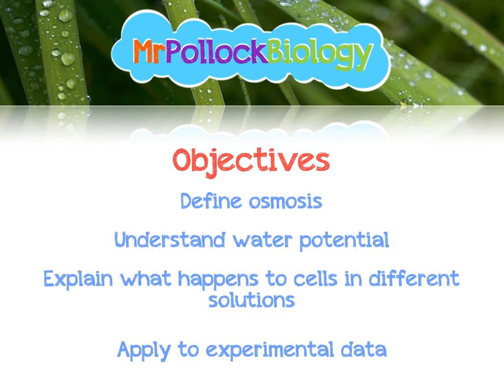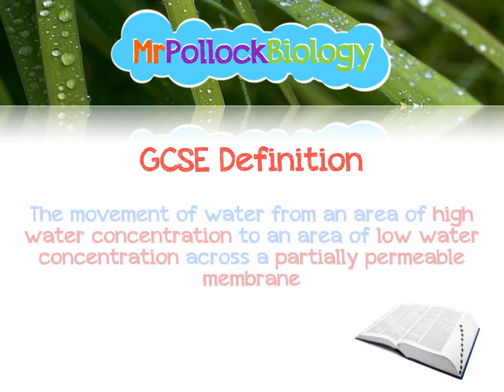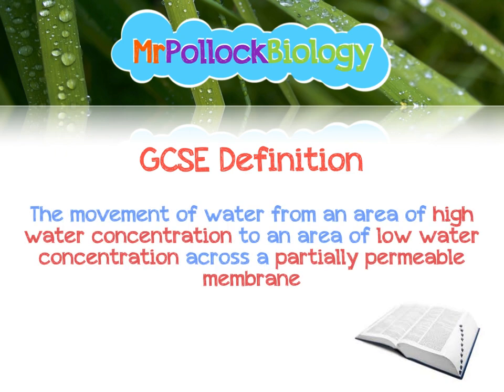Let's have a little look back at our GCSE osmosis definition, where you learned it's a specific case of diffusion. It was the movement of water from an area of high water concentration to an area of low water concentration, and this happened across a partially permeable membrane.